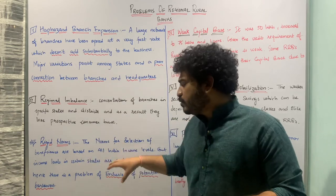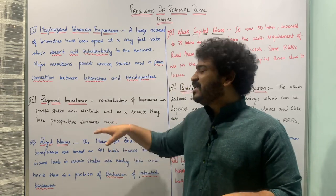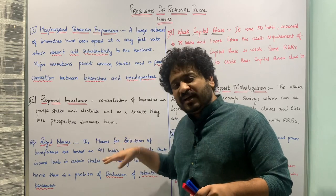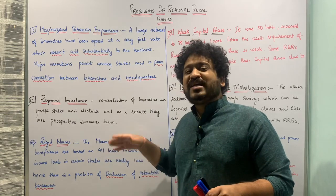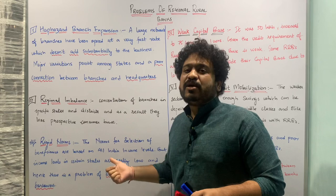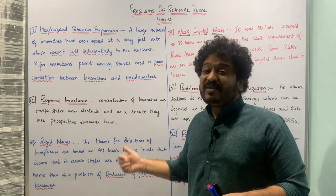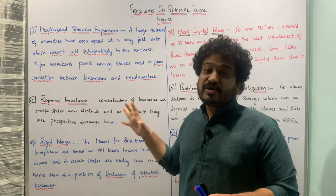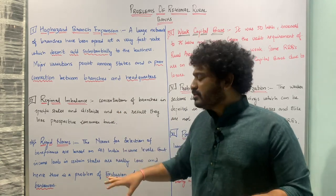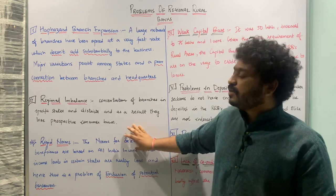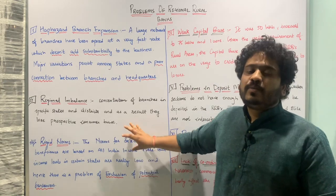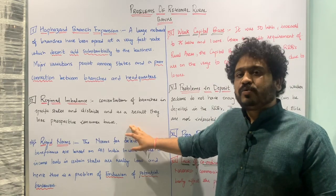Regional rural banks are primarily targeted towards the empowerment of weaker sections in the rural parts of the country. These rigid norms in relation to the selection of beneficiaries are creating a hindrance to the development of regional rural banks. This is the third problem associated with regional rural banks.